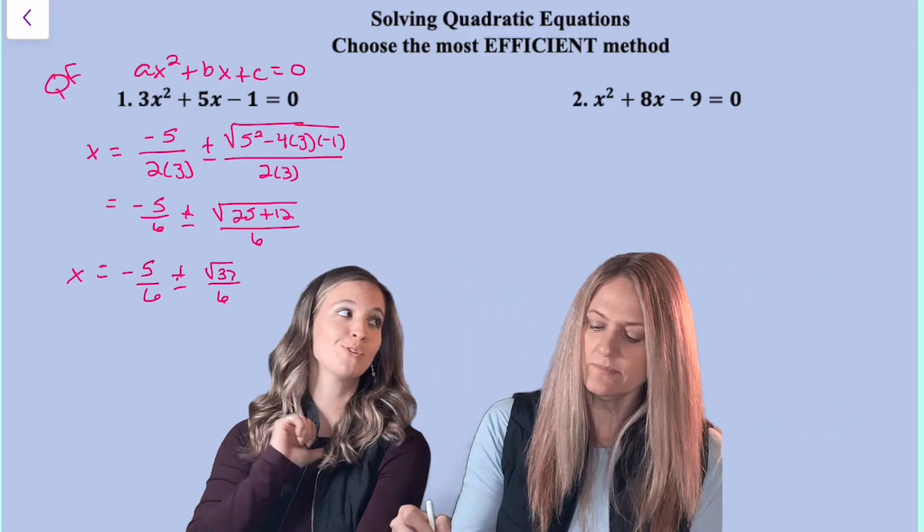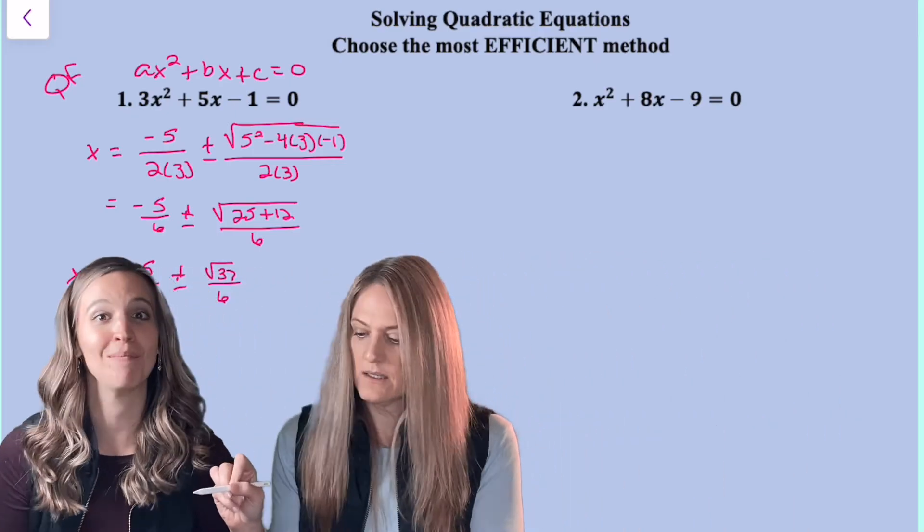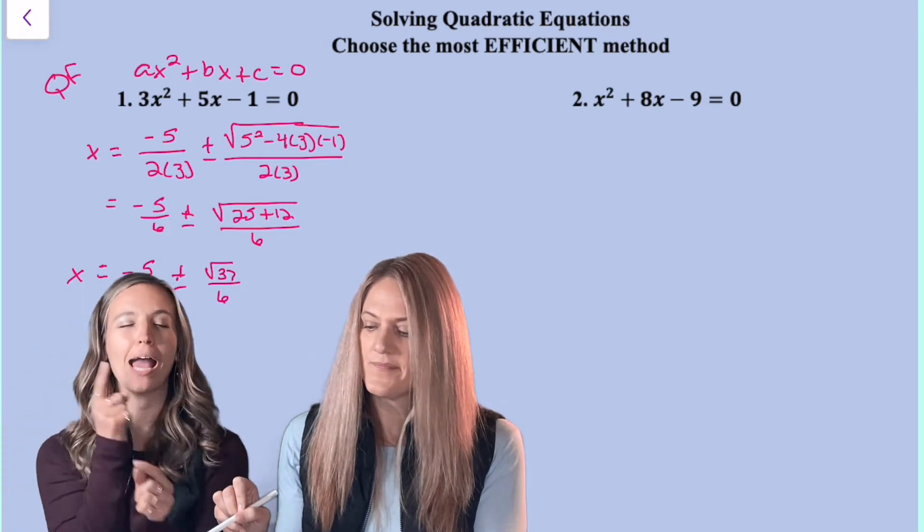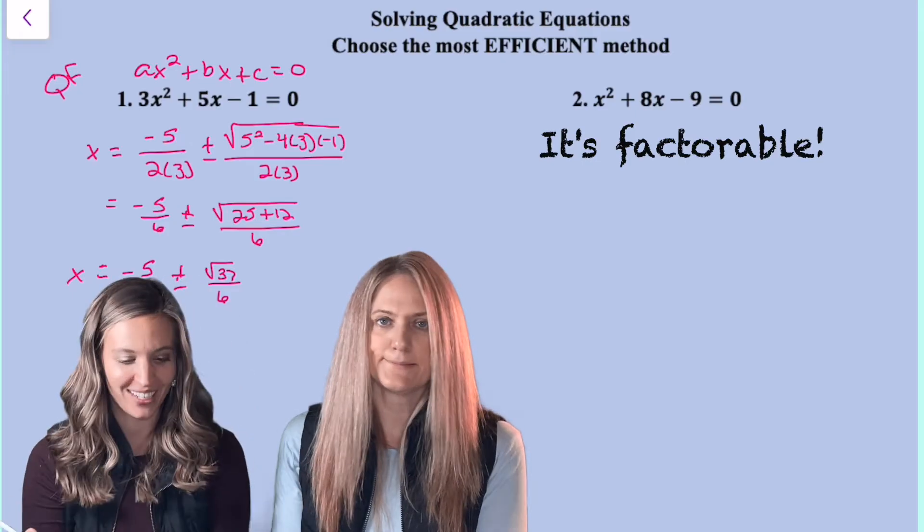Okay, so number two is all me then. You can't steal that one. X squared plus eight x minus nine. I have an A value of one and I bet you I can find factors of nine that add to eight. Factoring.